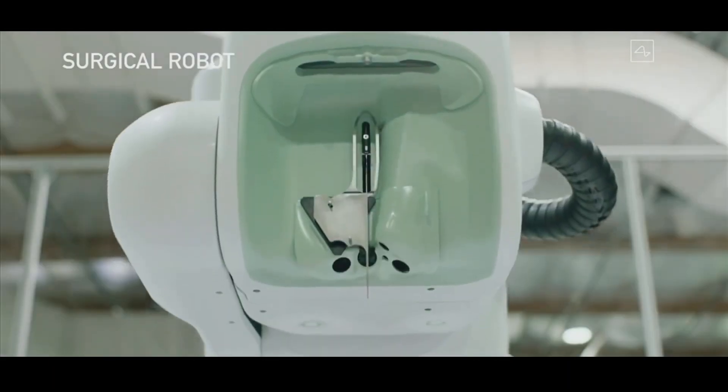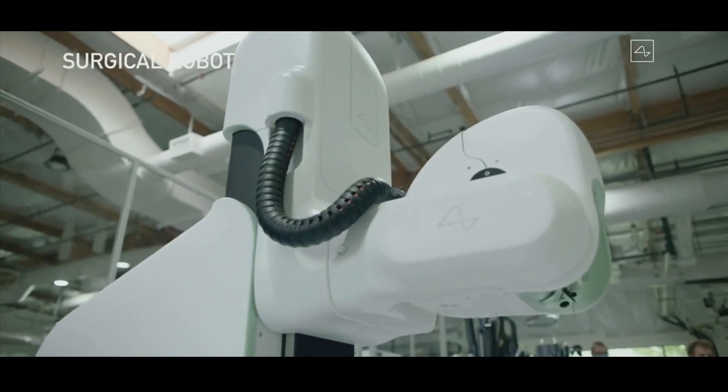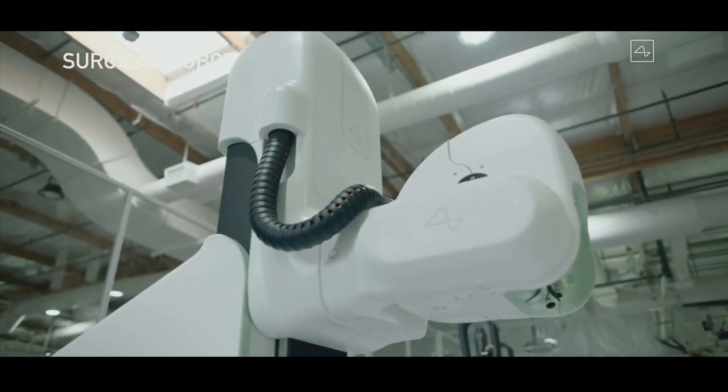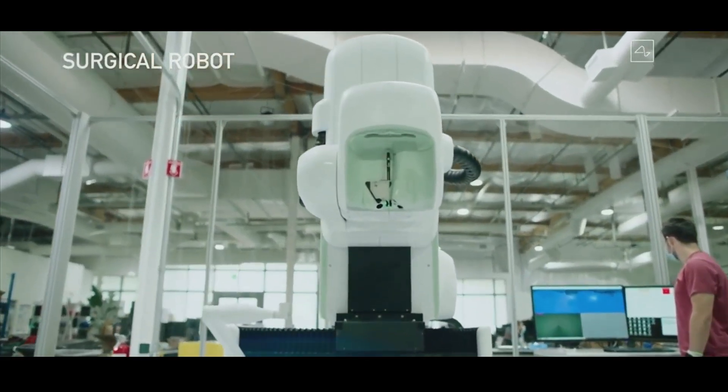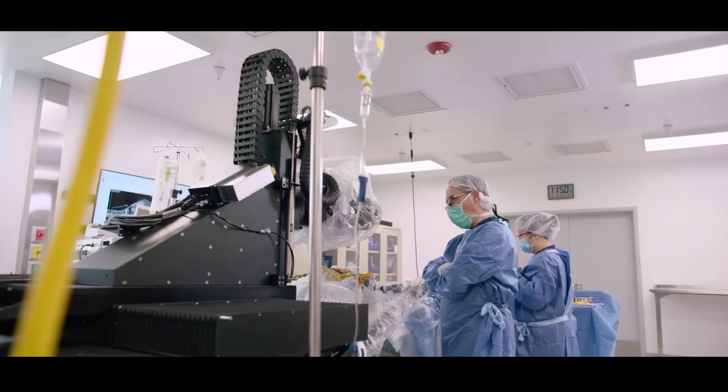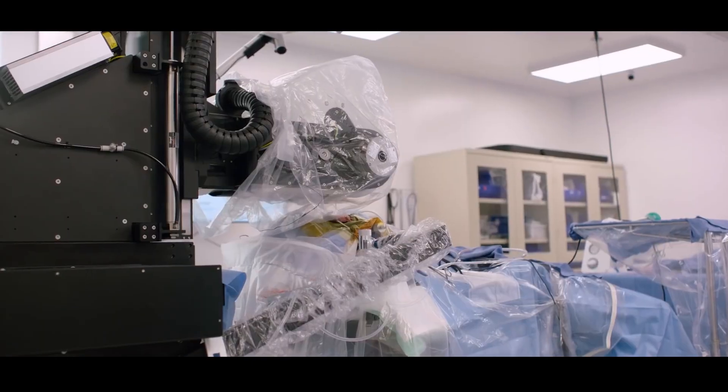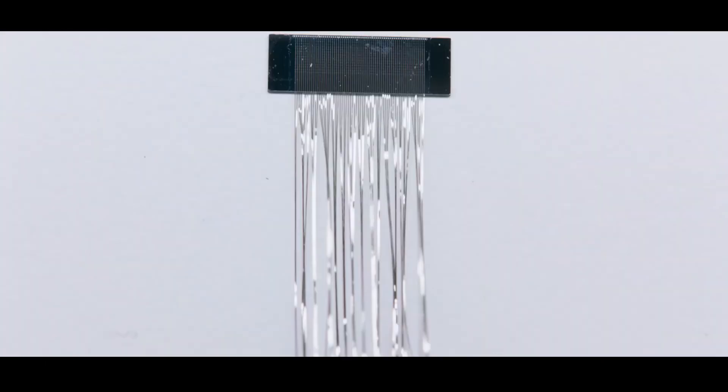Neuralink revealed that they had relocated the majority of their operations from California to Austin, Texas, where they had built a new facility specifically for device manufacturing during their show-and-tell live event in late 2022. The main goal of this factory is to get their implants and related systems quickly from prototype to mass production.